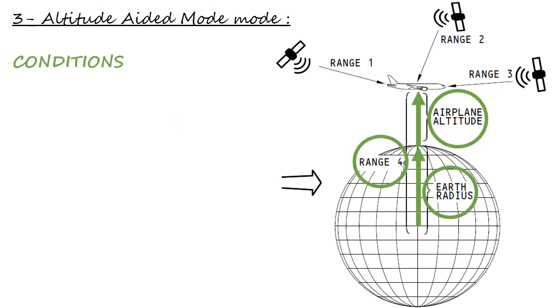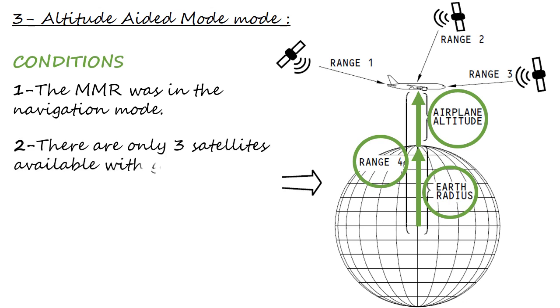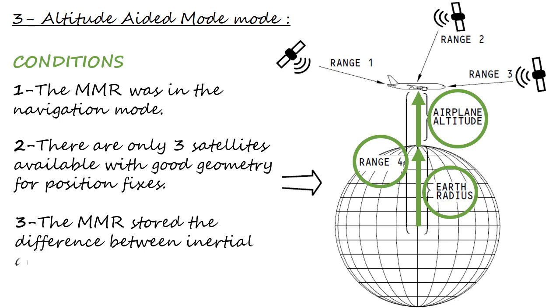The MMR enters the altitude-aided mode only after these 3 conditions are true: 1. The MMR was in the navigation mode. 2. There are only 3 satellites available with good geometry for position fixes. 3. The MMR stored the difference between inertial and GPS altitude in memory.